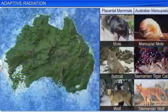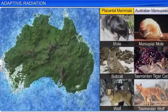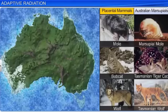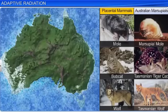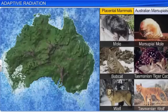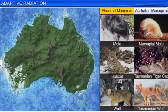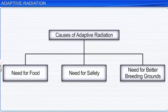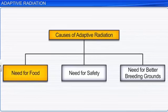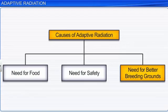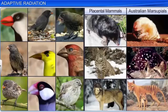Interestingly, on comparing marsupials and placental mammals of Australia, we find similar adaptive radiations between them. Although they have separate lineages, they resemble each other physically. Studies show that the impelling causes of adaptive radiation are the need for food, safety, and for better breeding grounds. Thus, the process of adaptive radiation illustrates how life forms have modified and evolved into new forms.